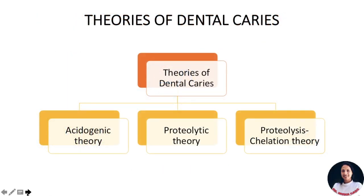There are many theories which have been proposed supporting the formation or spread of dental caries. But mainly these three theories — acidogenic theory, proteolytic theory, and proteolysis chelation theory — are the most popular theories justifying the formation and spread of dental caries.